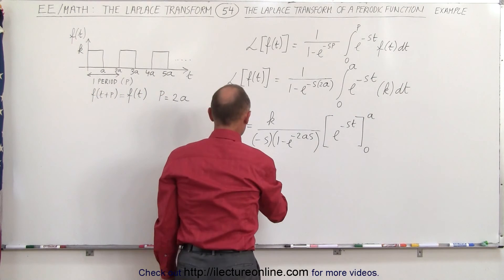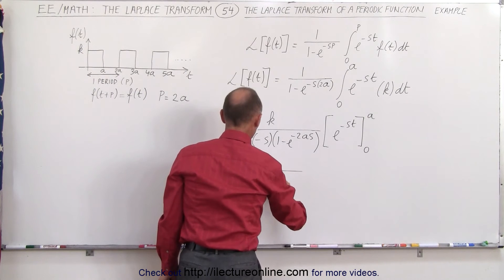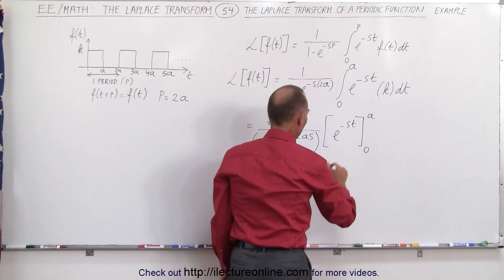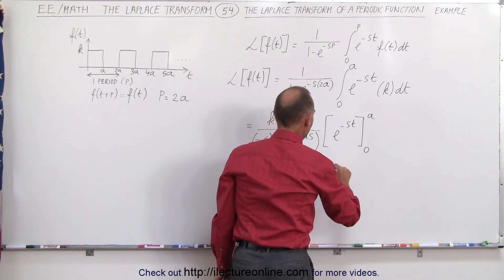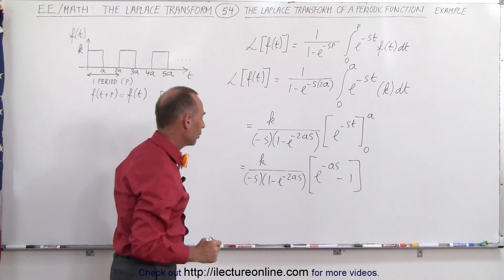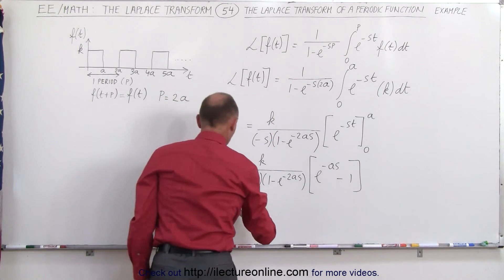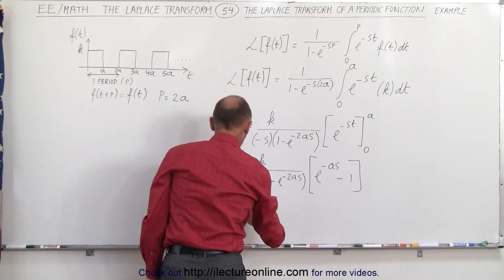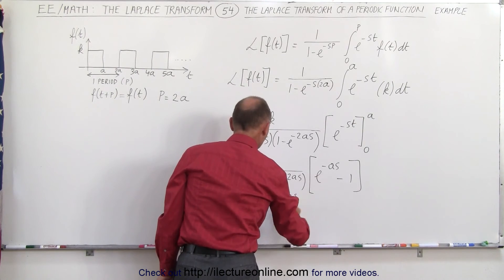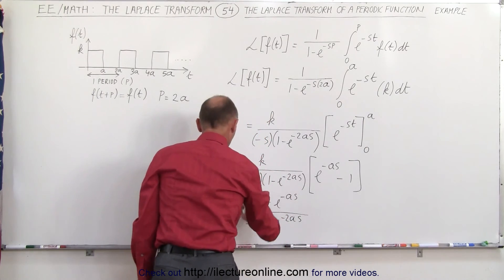When we plug in the limits we get k divided by minus s times 1 minus e to the minus 2as, times — plugging in the upper limit — e to the minus as, and plugging in the lower limit e to the 0 equals 1. We can take this negative sign and flip it over to put it in the same format. So this becomes equal to k over s, with 1 minus e to the minus as in the numerator and 1 minus e to the minus 2as in the denominator.